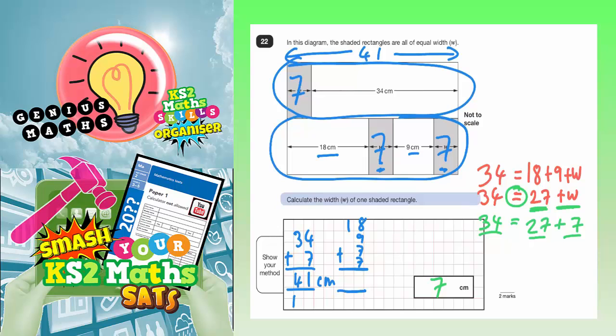So, let's have a look. 8 plus 9 is 17, plus 7 is 24, plus another 7 is 31. Put the 1 in, carry the 3. And then 1 plus the 3, which is carried, is 4.